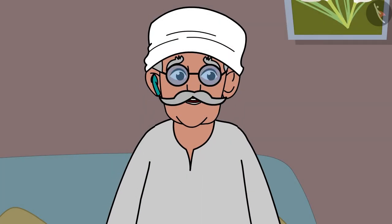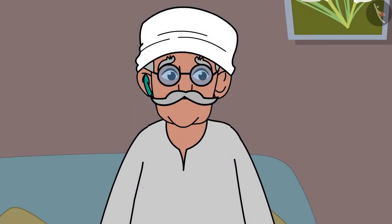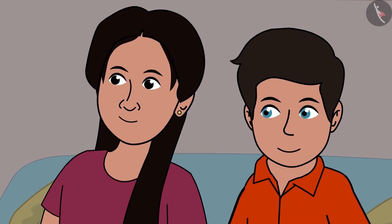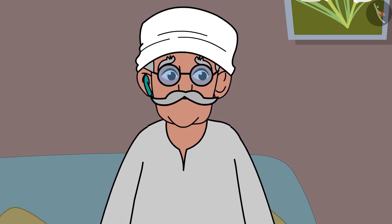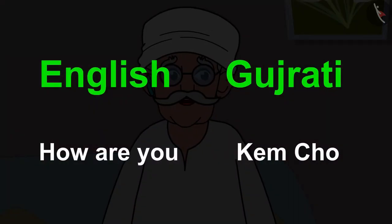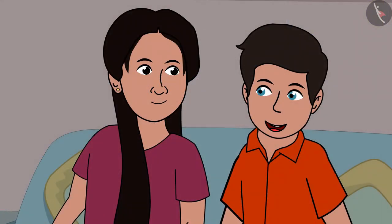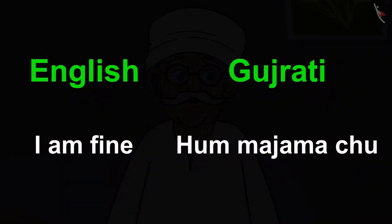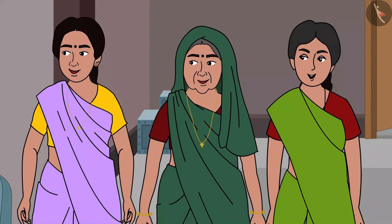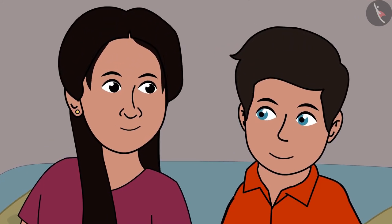It is said about the languages in India: Ghaat Ghaat Par Paani Badle, Kos Kos Par Vani. Tara and Sonu were very excited to learn Gujarati. Let us begin, children. I shall first begin with teaching you to ask 'How are you?' in Gujarati. In Gujarati, we say Kemcho. Kemcho Tara. What reply shall I give, Kaka? You will say 'I am fine.' Everyone started laughing looking at Tara and Sonu trying to speak Gujarati, and the children learned a few more words.